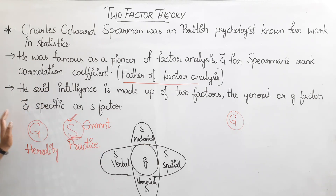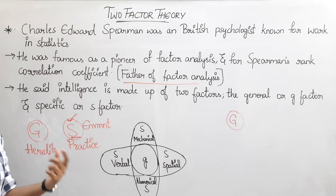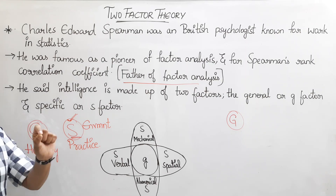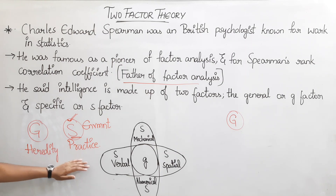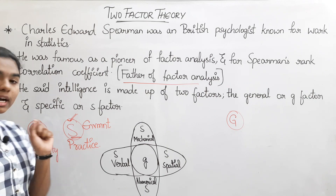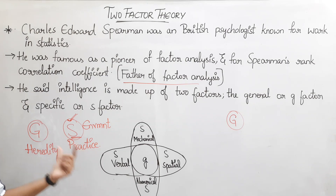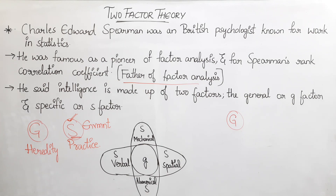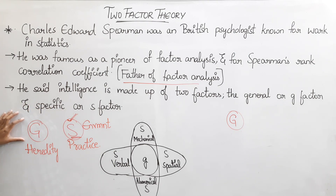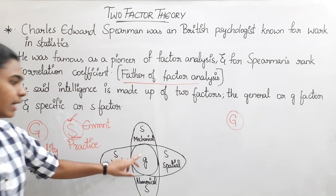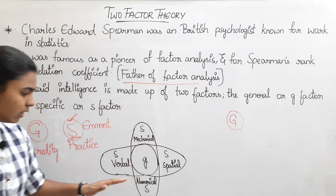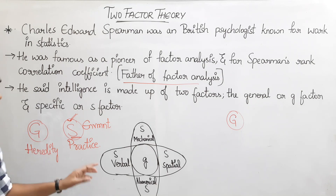For example, there is a specific ability for cricket — knowing how to bat and maintain form. If you want to play in a normal way, you can choose football. Cricket requires specific intelligence, while football relates to general physical ability. Other domains like mechanical, spatial, numerical, mathematics, and verbal-language skills also require specific ability and intelligence.